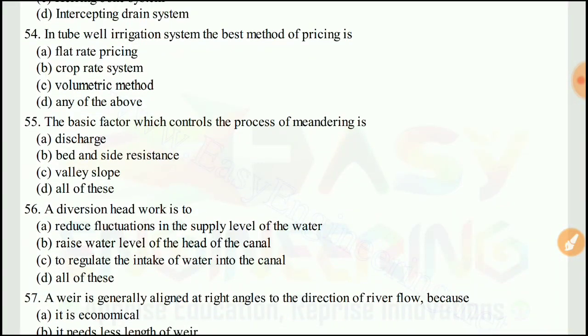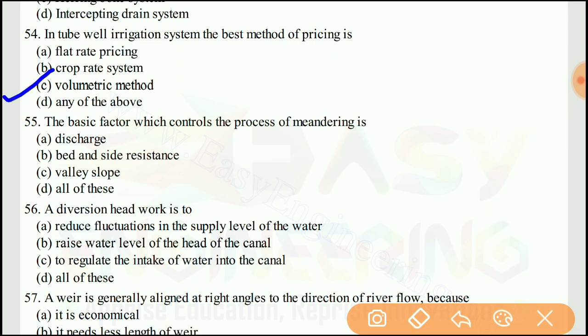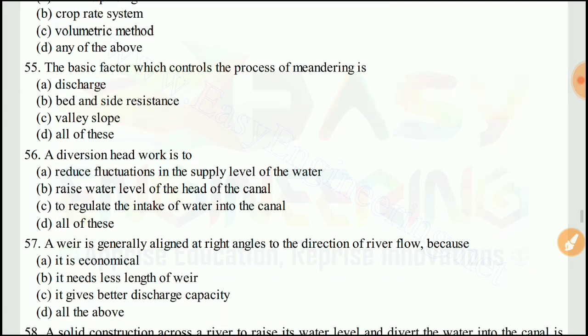Question 54: In a tube well irrigation system, the best method of pricing is — the right answer would be C, the volumetric method.